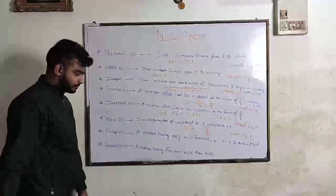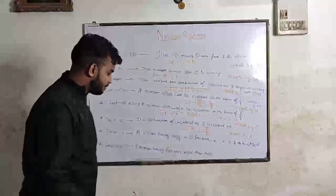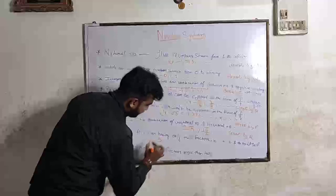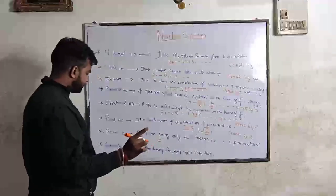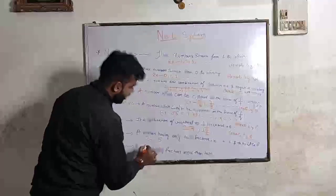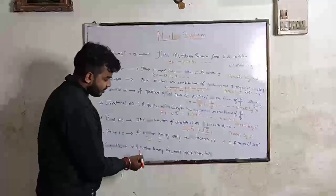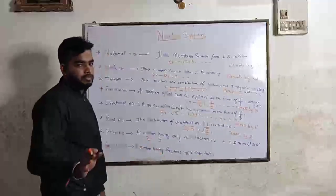Prime number. A number having only two factors: number one and number itself. Example: 5 is a prime number. And smallest prime number is 2 and largest prime number is infinite. And 2 is the only even prime number.